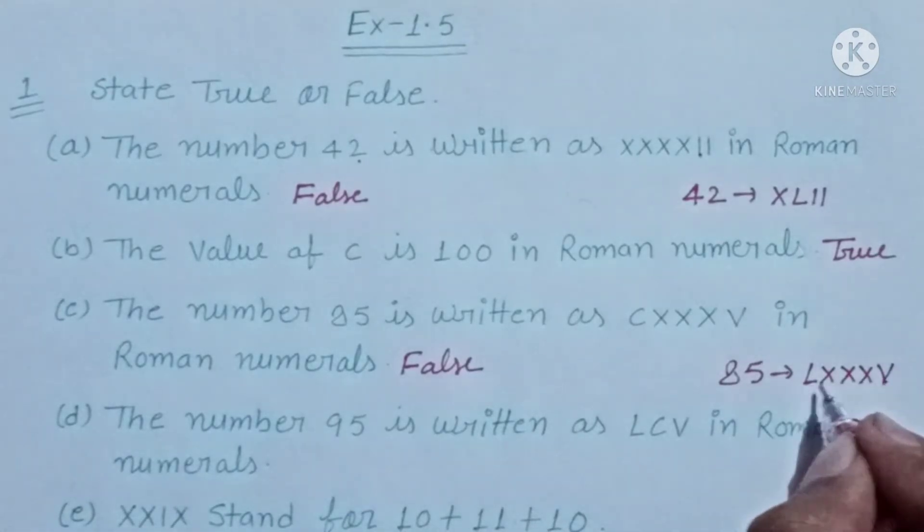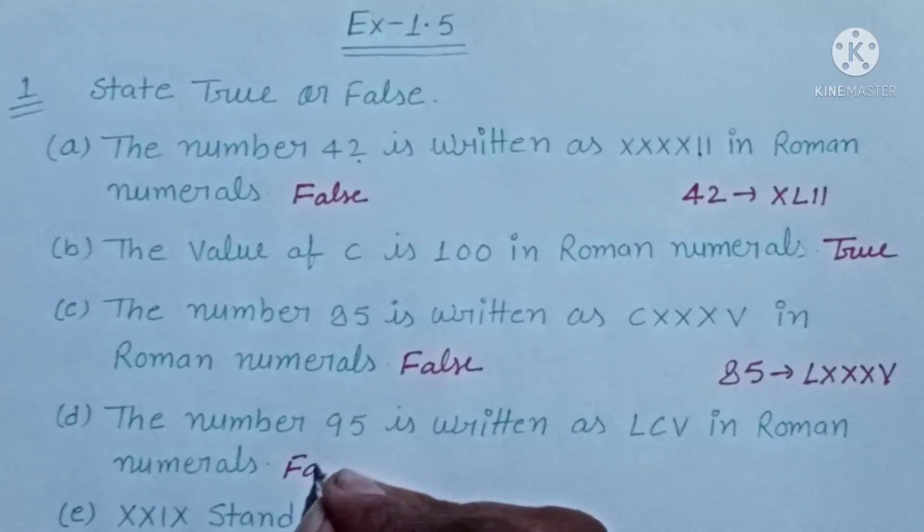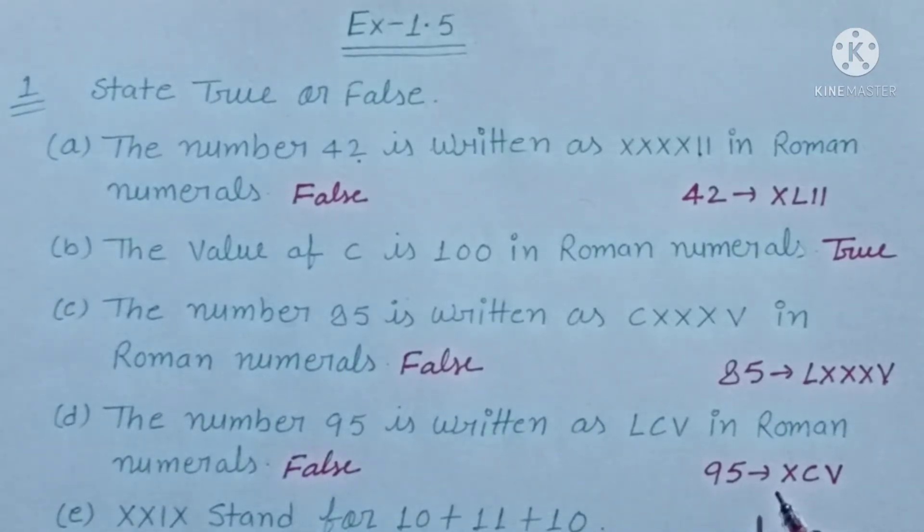The number 95 is written as LCV in Roman numerals. 95 in Roman numerals is XCV. When a smaller symbol is on the left-hand side of a bigger symbol, it is less than. 10 minus from 100 is 90, plus 5 is 95. Okay, come to the next.